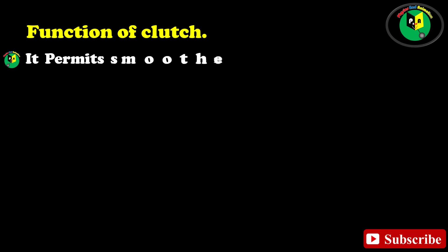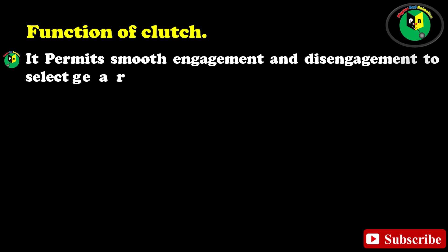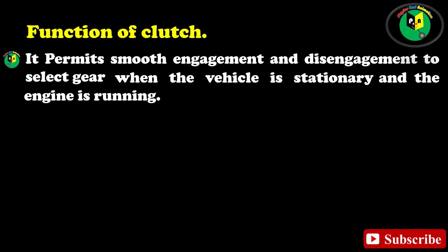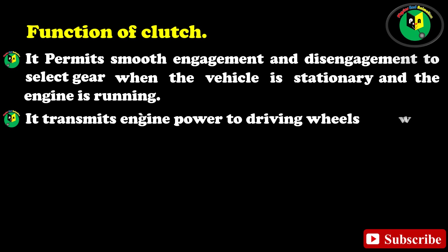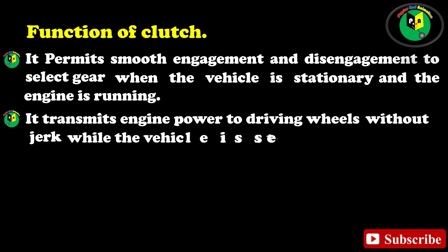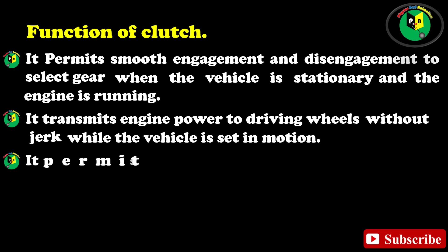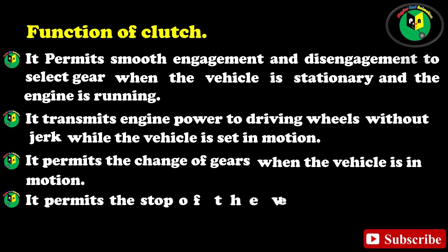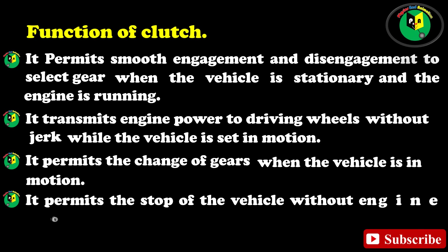Function of clutch: 1. It permits smooth engagement and disengagement to select gear when the vehicle is stationary and the engine is running. 2. It transmits engine power to driving wheels without jerk while the vehicle is set in motion. 3. It permits the change of gears when the vehicle is in motion. 4. It permits the stop of vehicle without engine cut off.